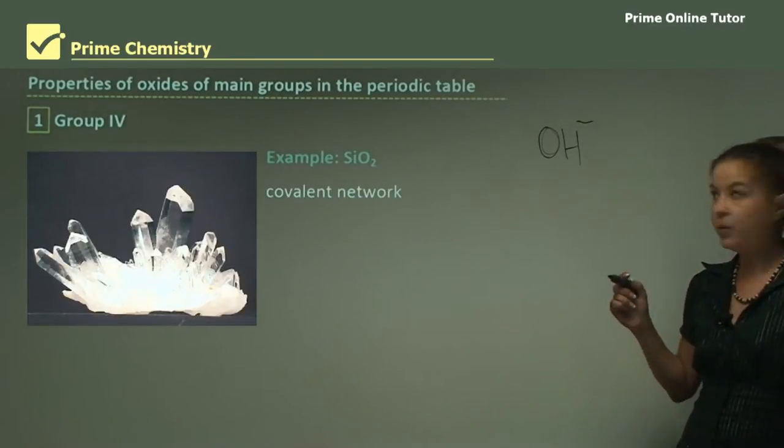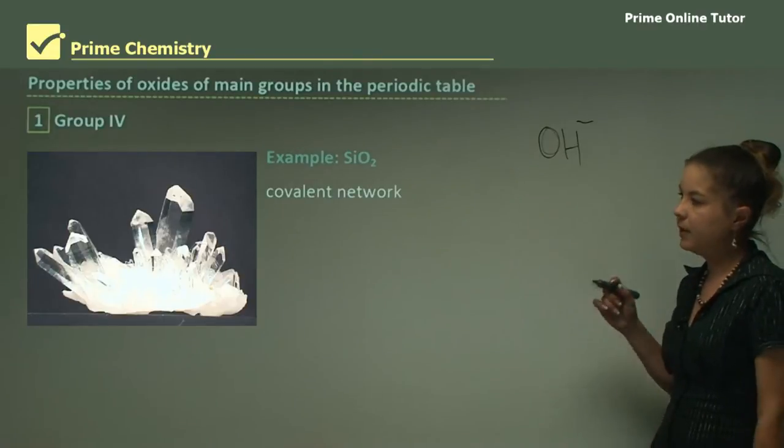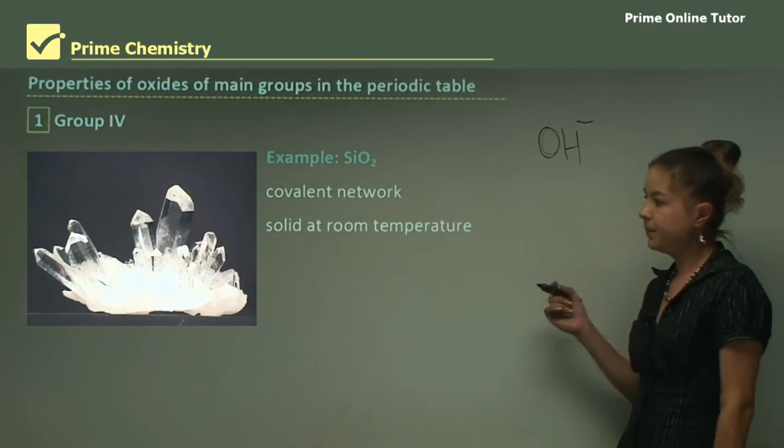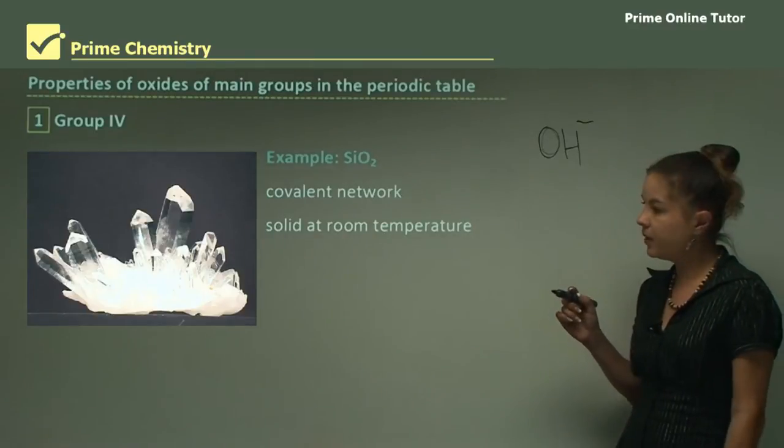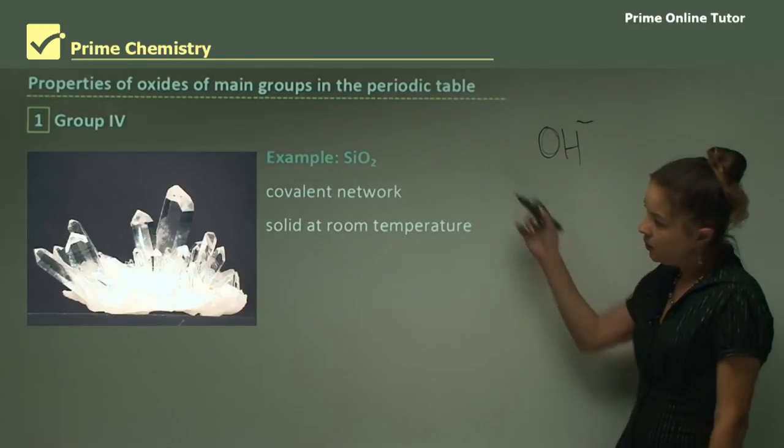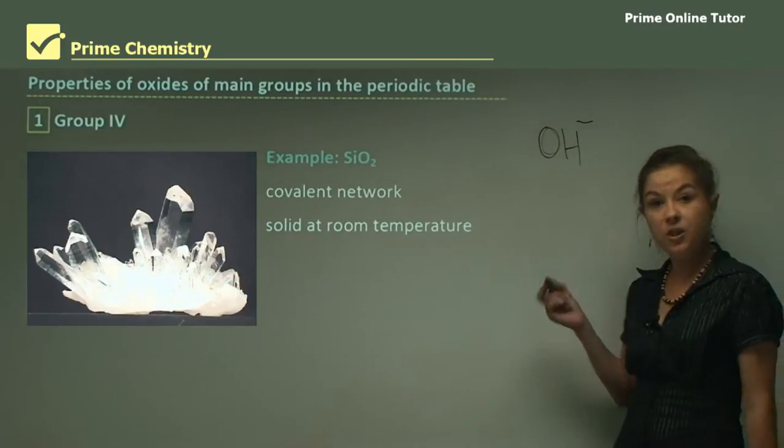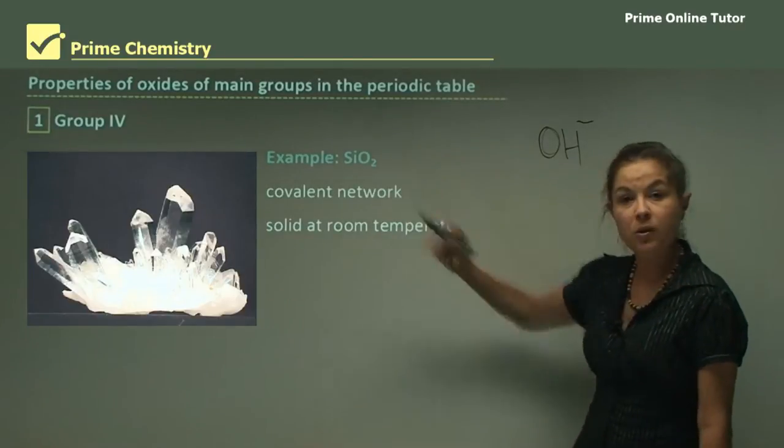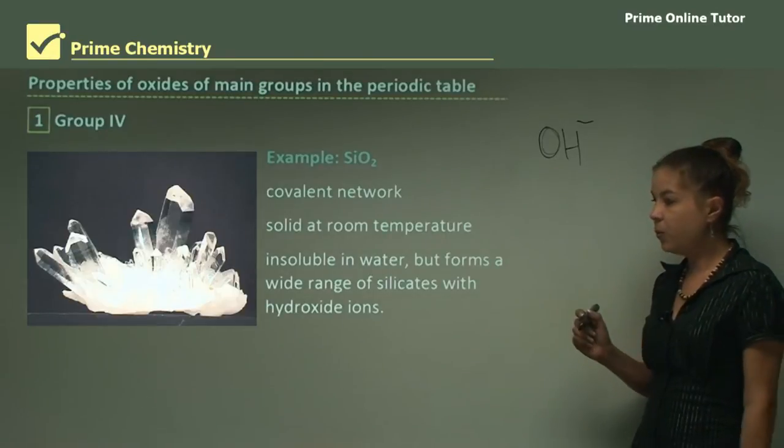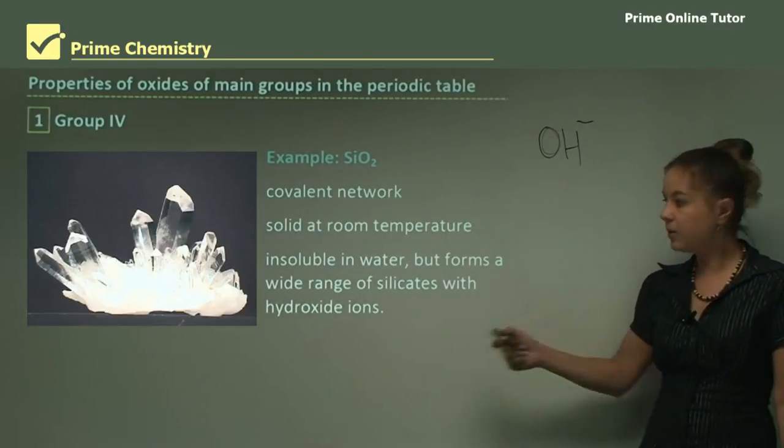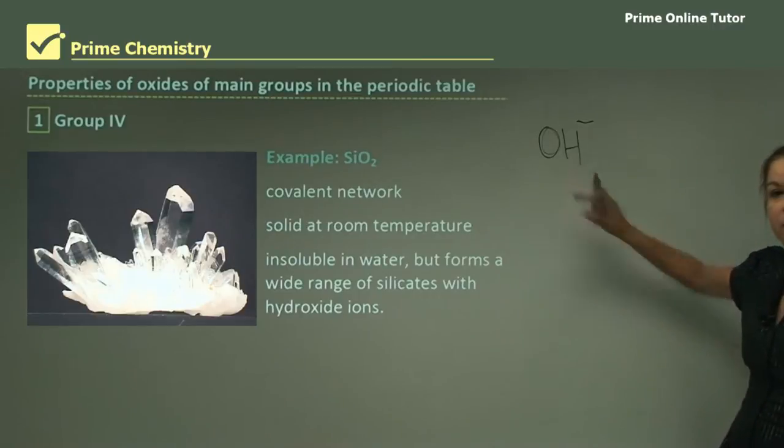A second example for Group 4 is silicon oxide, a covalent network solid at room temperature. As you can see from the picture, it's a lovely crystal of silicon oxide or more specifically silicon dioxide, SiO2. It's insoluble in water but forms a wide range of silicates with hydroxide ions OH-.